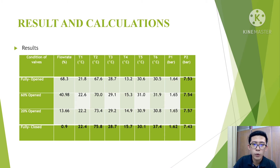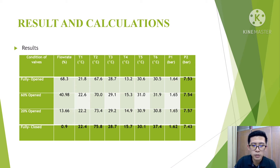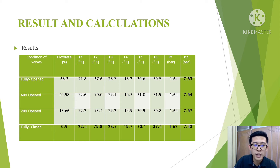Hi everyone, my name is Lim Zhenwei, and I will continue with the results and calculations. From this table, we can see there are 4 valve conditions conducted in our experiment: fully opened, 60% opened, 20% opened, and fully closed. The flow rates for each condition respectively are 68.3%, 40.98%, 13.66%, and 0.9%.